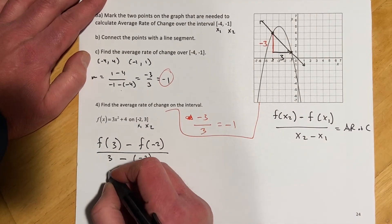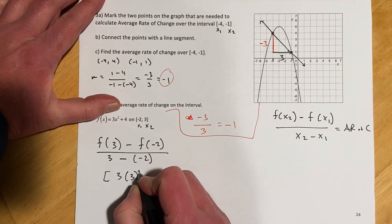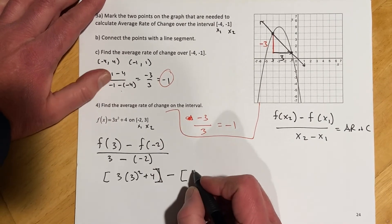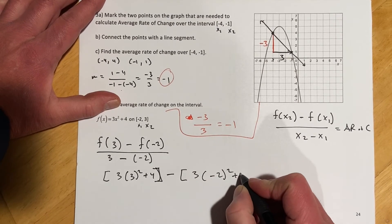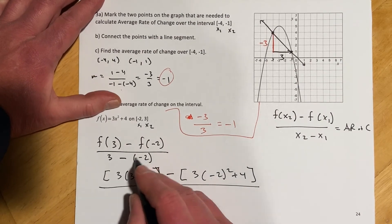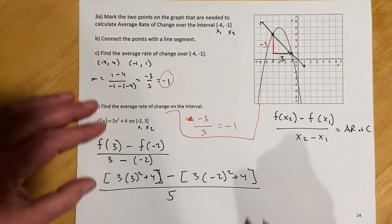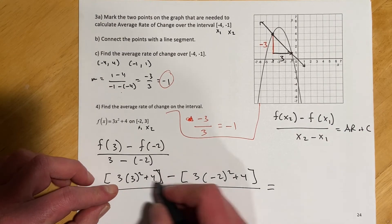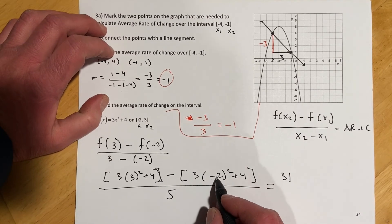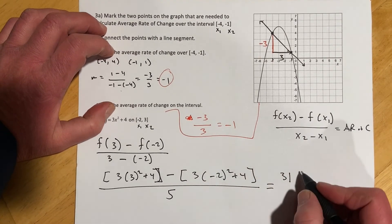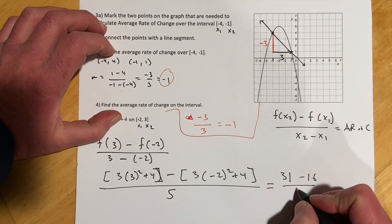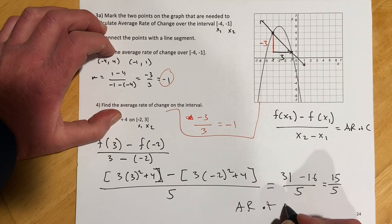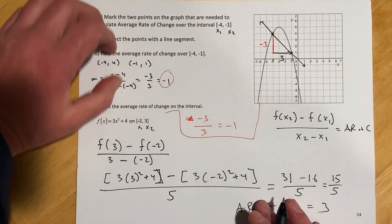So f of three, I'll write that out right down here. That's going to be three times three squared plus four. And then minus f of negative two, so that's going to be three times negative two squared plus four. And that's all over three minus negative two, which would be five. Three squared would be nine times three is 27, and then four makes 31. And that's going to be four times three is twelve plus four is sixteen. That's a minus sign, so 31 minus 16 over five. And so that is fifteen over five, so my average rate of change is three.